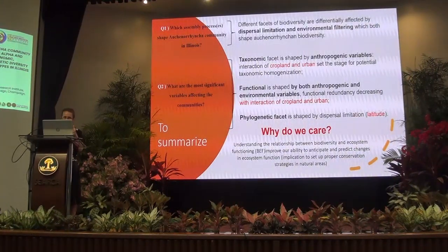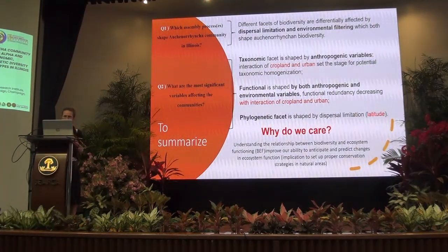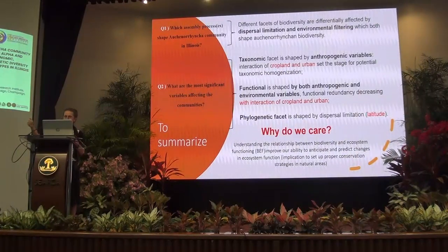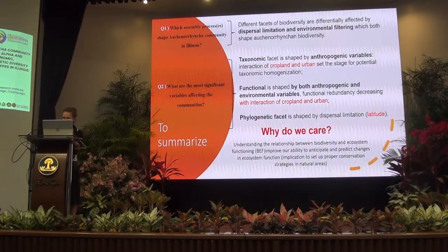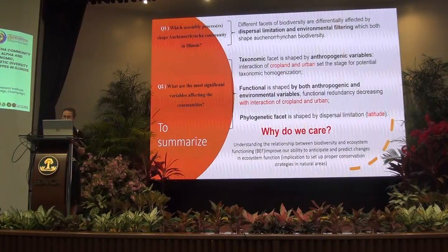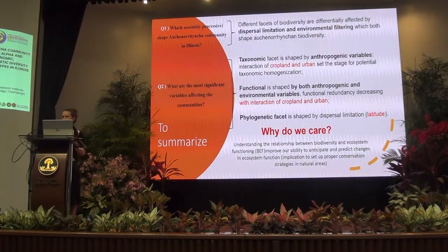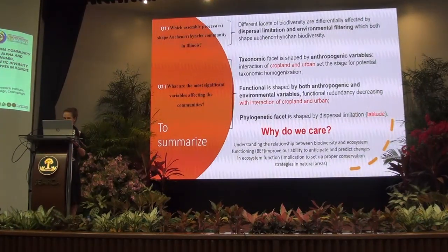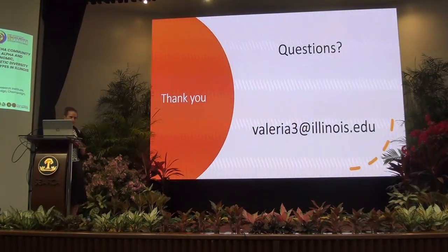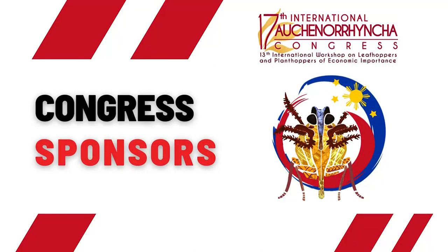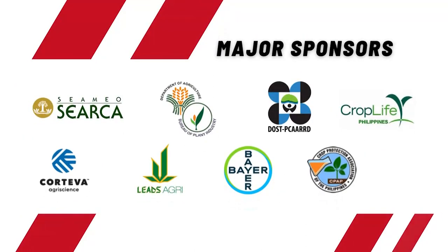Why do we care? Understanding the relationship between biodiversity and ecosystem functioning — acronymized as BEF — improves our ability to anticipate and predict trends and future changes in ecosystem function. This has tremendous implications for setting up proper conservation strategies in natural areas that are not just going to focus on species of concern, because we also need a community-level approach. Thank you.